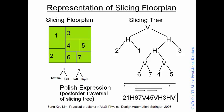Now we have to do a post-order traversal of this slicing tree. I suggest that when you do that you always start from the bottom and from the leftmost node. In a post-order traversal it is left subtree, right subtree, and then the node itself. So I start with 6, 7, V — that is the order: left, right, and the node itself. Then I have another subtree: 4, 5, V. Putting them together: 6, 7, V, then 4, 5, V, then H.